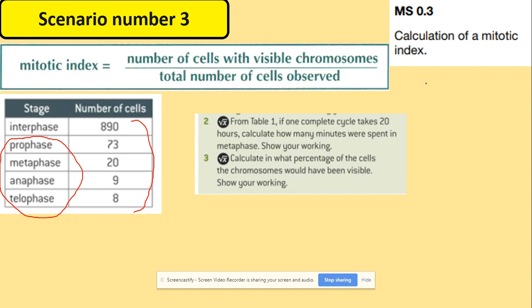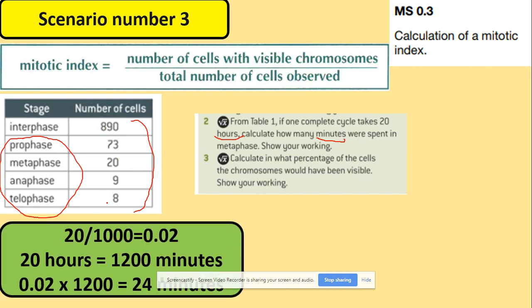For harder questions, you may be told the cell cycle takes 20 hours and asked to calculate how many minutes are spent in metaphase. The total number of cells is 1000, and cells in metaphase is 20, so 20 divided by 1000 equals 0.02. Then, 20 hours equals 1200 minutes, and 0.02 multiplied by 1200 gives 24 minutes spent in metaphase.